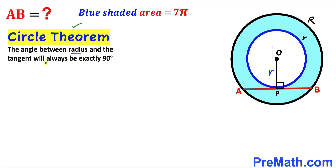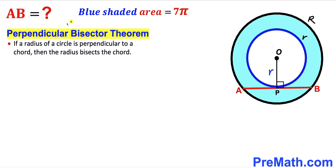Now let's recall the circle theorem: the angle between the radius and the tangent line will always be 90 degrees. So this angle at P is 90 degrees, since OP is the radius and AB is the tangent line. Now let's recall the perpendicular bisector theorem: if a radius is perpendicular to a chord, then the radius bisects the chord. Here AB is the chord and OP is perpendicular to it, so AP equals BP.